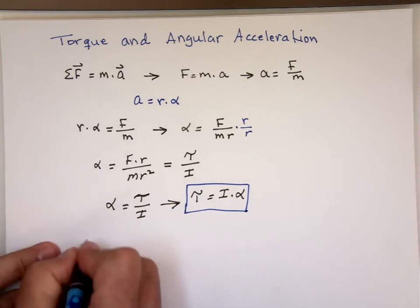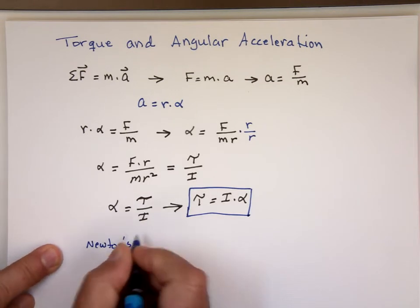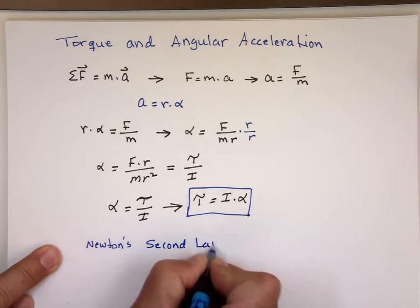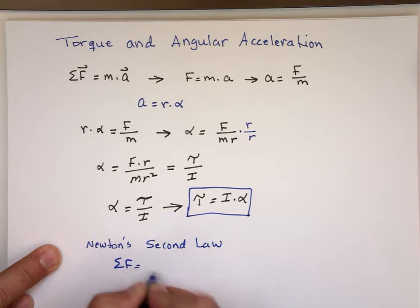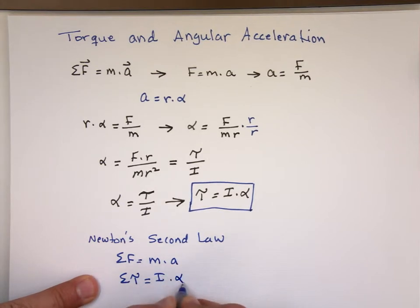This is really Newton's second law. We know it says the net force equals mass times acceleration. Here we can say the net torque equals inertia times angular acceleration. We use this when things are spinning, going in a circle, rotating. We use this when we have linear things moving straight line. Let's take a few examples.